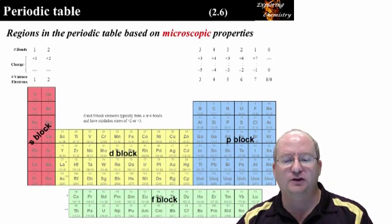Above the periodic table are trends that exist across the periodic table. The number of bonds, the atomic charge, and the number of valence electrons.